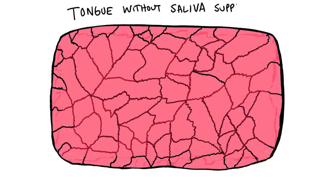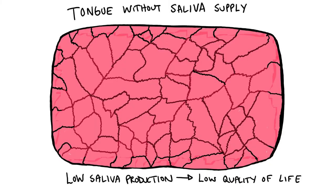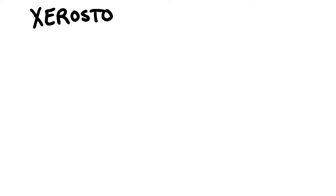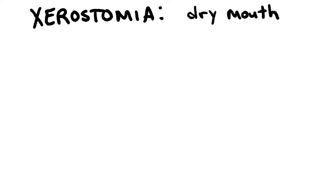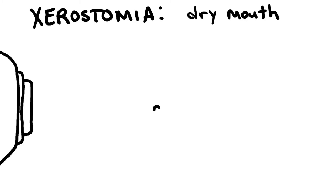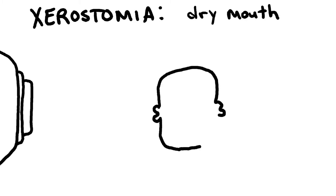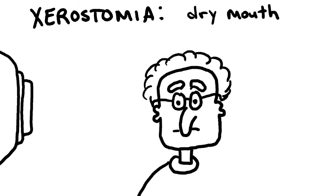Picture a desolate desert with a tumbleweed drifting across a hard cracked floor. Well, that floor is probably close to what your tongue would look like if you stopped producing saliva. The condition of having a dry mouth due to low saliva production is called xerostomia. It's known to drastically diminish the quality of life of whoever has it, and unfortunately it is quite often a severe side effect for head and neck radiotherapy patients.